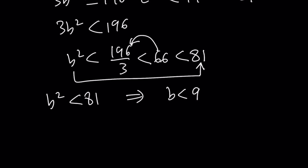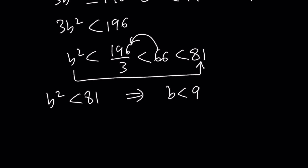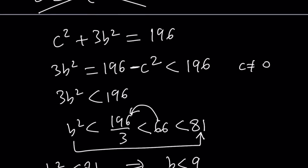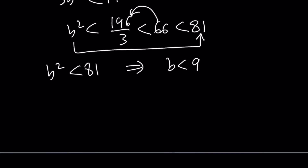Also, a and b are interchangeable, so whatever we find for b will be true for a as well. Since b is less than 9, let's plug in values for b and find the corresponding c values from c squared plus 3b squared equals 196. Note that c is not a multiple of 3, but b can be. We'll compute c squared equals 196 minus 3b squared for each b, and check whether it's a perfect square. Then a equals negative b plus or minus c, divided by 2.